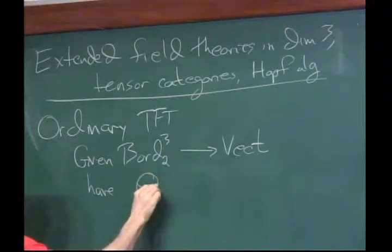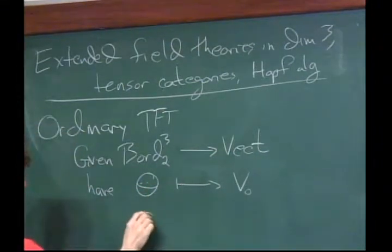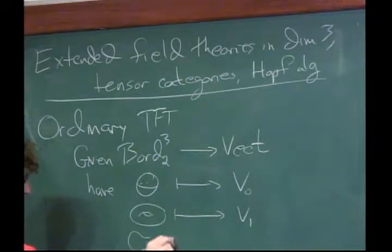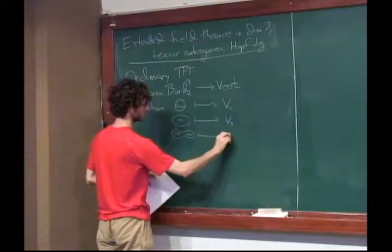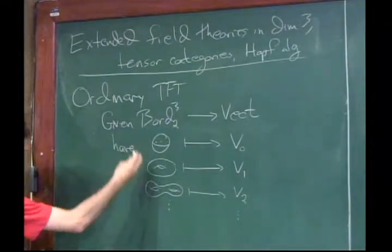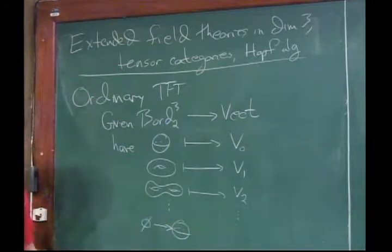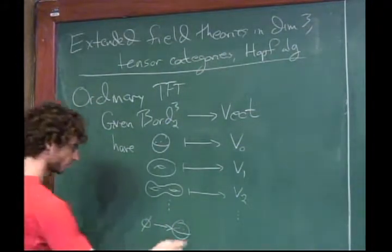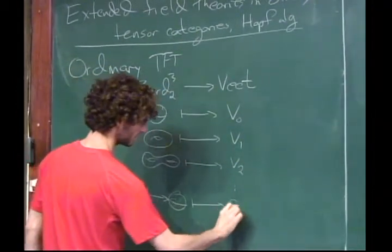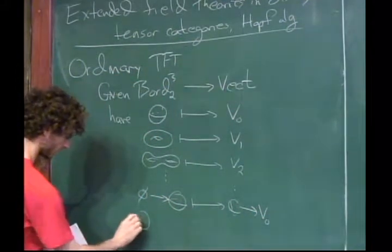We have some vector space associated to the sphere, call it V0, and some vector space associated to genus one surface and genus two, and so on. We have this whole collection of vector spaces. Now what three-dimensional bordisms do we have? There's a bordism from the empty manifold to the sphere — just the solid ball — and so that goes to some map from C to V0, and then we could go the other way.